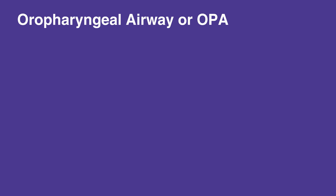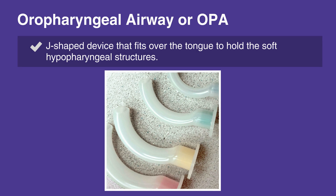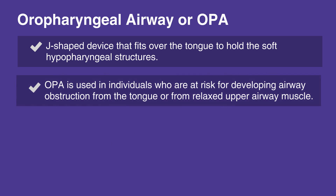The oropharyngeal airway, or OPA, is a J-shaped device that fits over the tongue to hold the soft hypopharyngeal structures and the tongue away from the posterior wall of the pharynx. OPA is used in individuals who are at risk for developing airway obstruction from the tongue or from relaxed upper airway muscles.